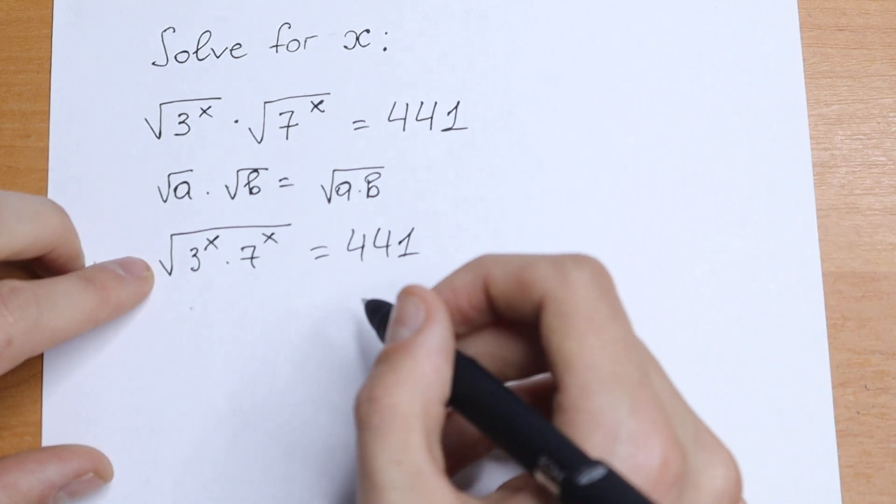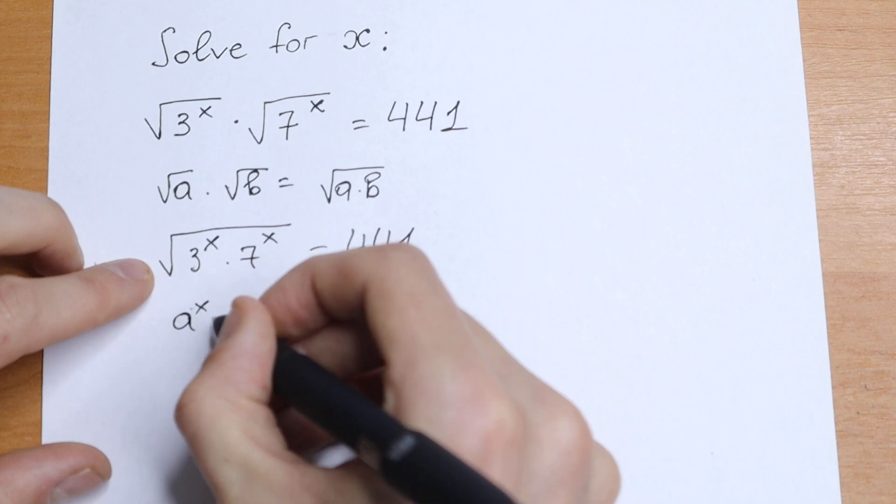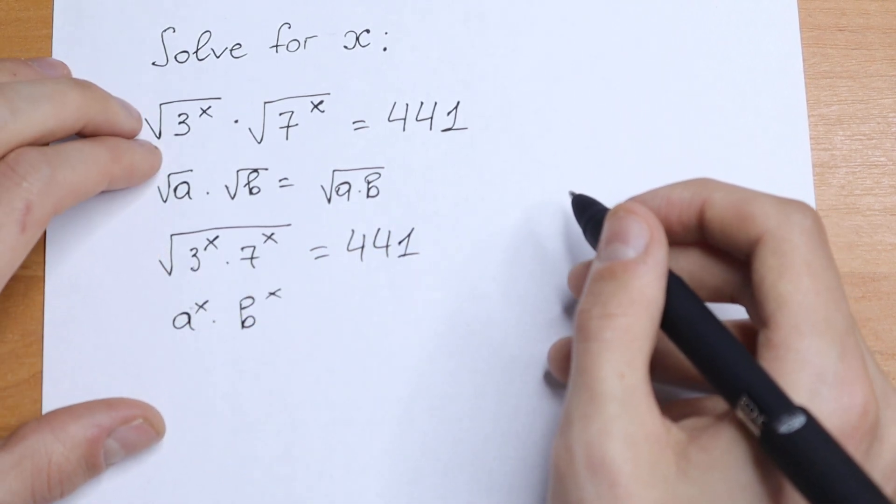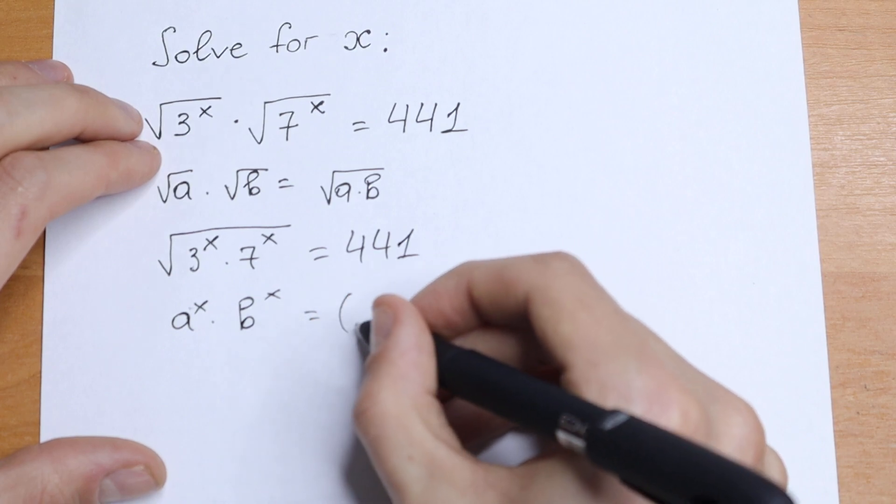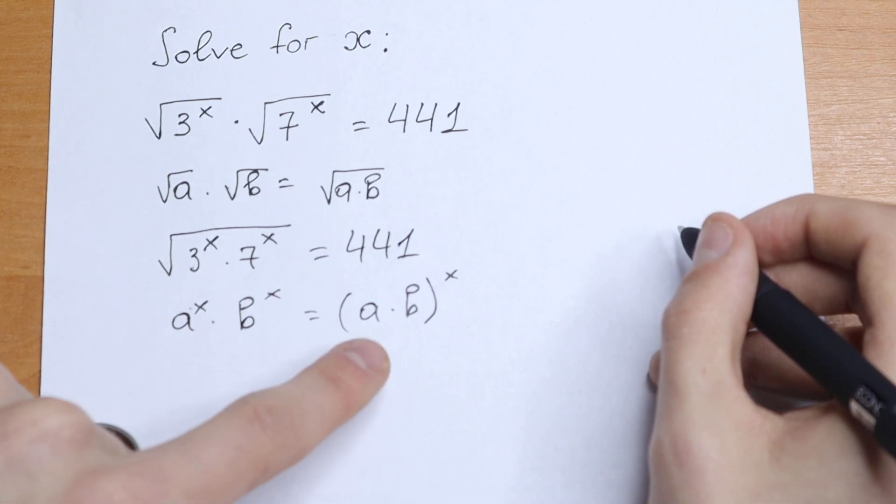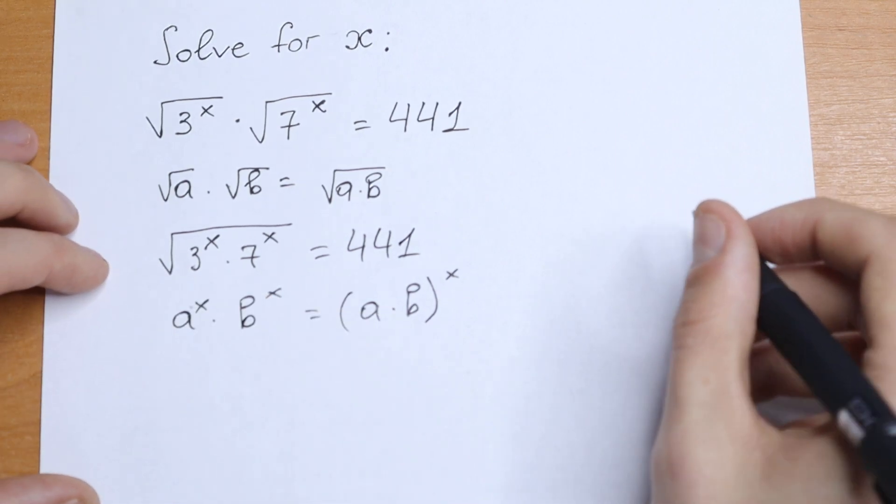The next rule we need is when we have a to the power x times b to the power x. So if we have different bases but same exponent, we can write it as a times b all raised to the power x. So we can write this under one square root. So let's do this.